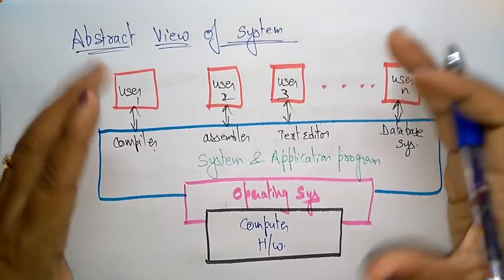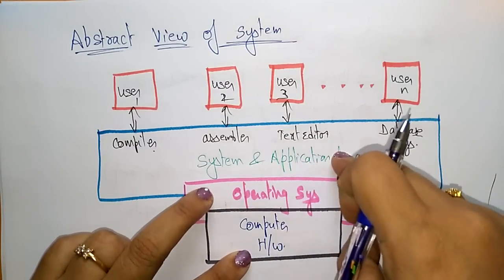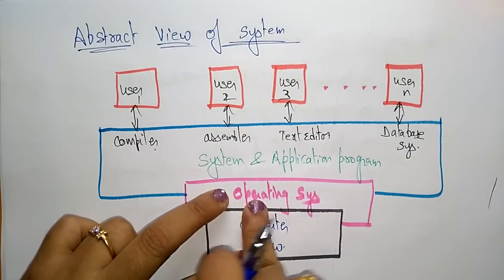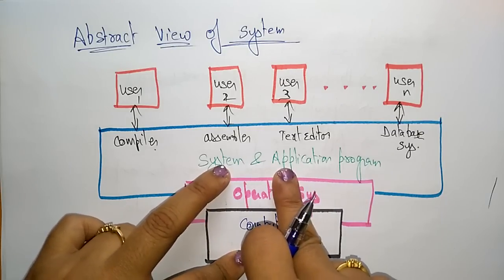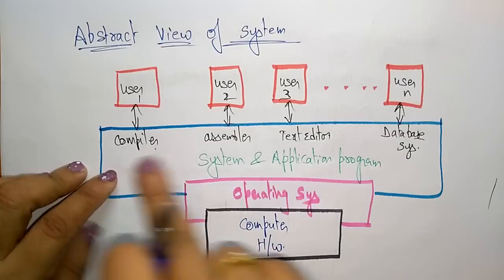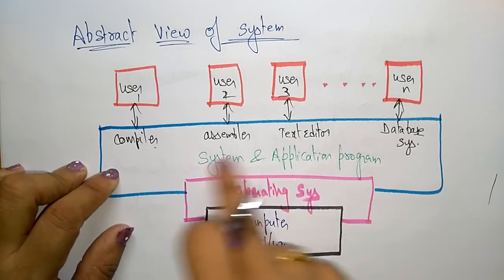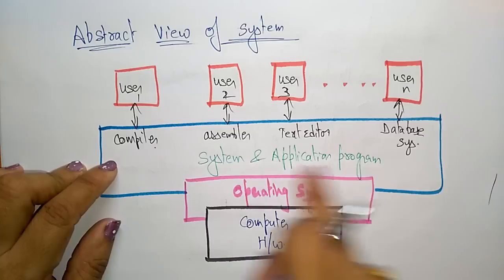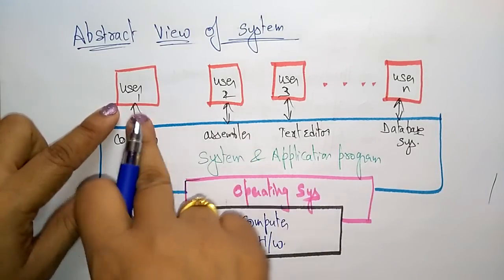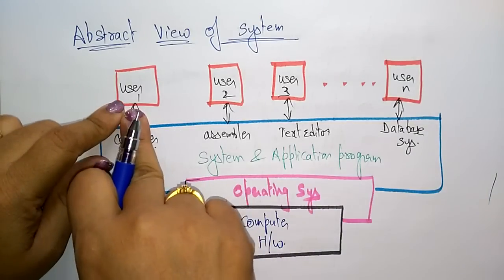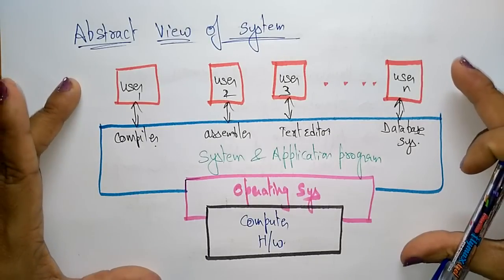Below the application programs, you have the operating system, and below that is the computer hardware. This is the complete abstract view of any system. The operating system acts as an interface between the application programs and the computer hardware. The application programs may be a compiler, assembler, text editor, or database system. Users — people, systems, or other computers — interact at the top level.